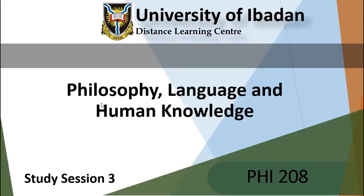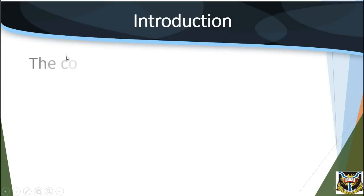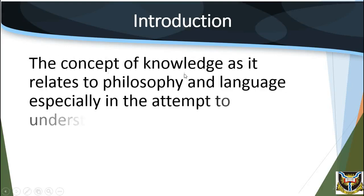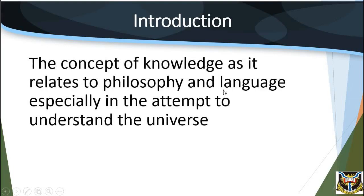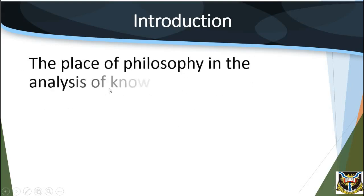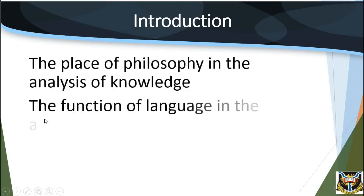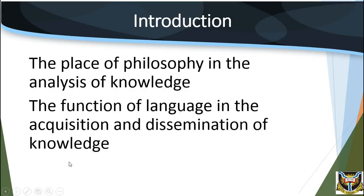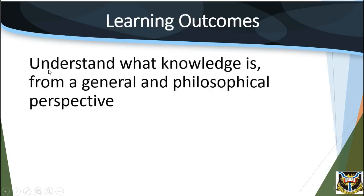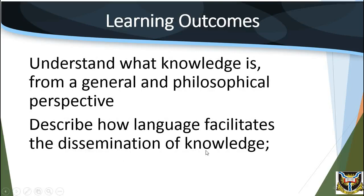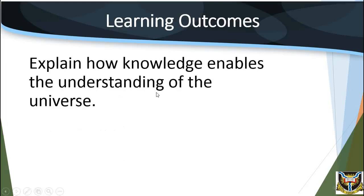Study Section 3: Philosophy, Language and Human Knowledge. This study section will broaden your knowledge on the concept of knowledge as it relates to philosophy and language, especially in the attempt to understand the universe. You will first examine the place of philosophy in the analysis of knowledge, and then go on to examine the function of language in the acquisition and dissemination of knowledge. Learning outcomes: when you have studied this section, you should be able to understand what knowledge is from a general and philosophical perspective, describe how language facilitates the dissemination of knowledge, and explain how knowledge enables the understanding of the universe.